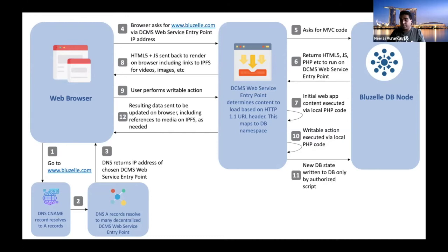The browser can now show the website. To the web user, they don't even know they've hit a decentralized endpoint. Now let's say the user fills out a form — a writable action. That's number nine. It goes back to the entry point, which is going to execute any dynamic code that needs to run, then go back to the database node and write it. Finally, the access point sends back the data for the final rendered content based on whatever you wrote. It can refer to content that came from BluZell, but it could also use IPFS for any sort of content coming from there.